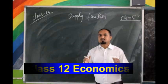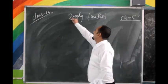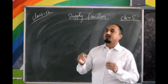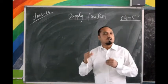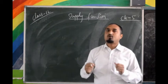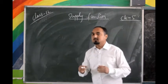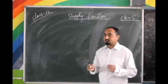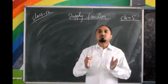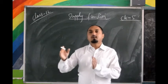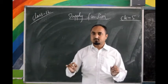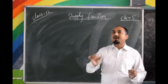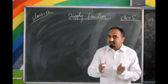Today we are going to start a new topic — the supply function. We are in chapter number five, and we have already completed the determinants of supply, or what are the factors responsible for affecting the supply of a company. So today we are doing a new topic: supply function. Supply function shows the functional relationship between the quantity supplied and its determinants.